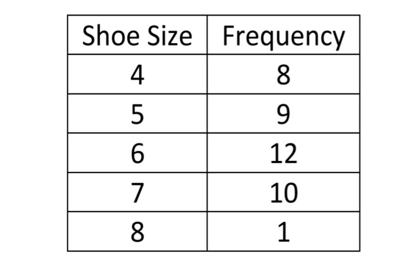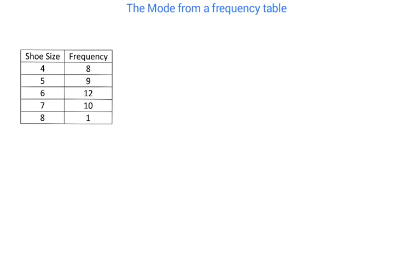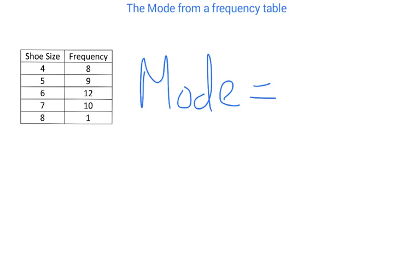Let's start with the mode, which is one of the easiest ones. The mode is the piece of data that has the highest frequency. From the table we can see that 12 people said they had size 6 feet, and 10 people said size 7, but the highest frequency is 12. So the mode equals 6 — not 12. Size 6 is the piece of data that was collected 12 times.